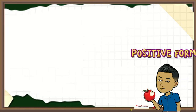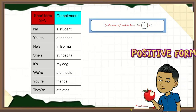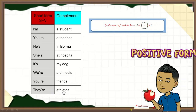Un punto muy importante es que podemos usar las formas cortas. En vez de decir I am, puedo decir I'm — podemos juntar el sujeto más el verbo. I'm a student. You're a teacher. He's in Bolivia. She's at hospital. It's my dog. We're architects. You're friends. They're athletes.